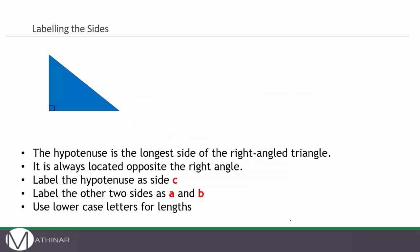The first thing you need to be able to do is label the sides correctly. We went through this in the last video so I'm just going to go through this very quickly. The hypotenuse is the longest side which is always opposite the right angle. We're going to label this as C. The other two sides are going to be called A and B — it doesn't matter which one you label A and B as long as C is in the right place. Remember to always use lowercase letters for lengths.